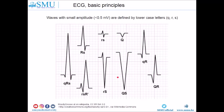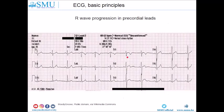The pattern of small r, small s, and large R-prime (R') complexes is typically seen in bundle branch blocks. During the assessment of QRS complexes, it is also very important to look at the progression of R-wave in the precordial leads.